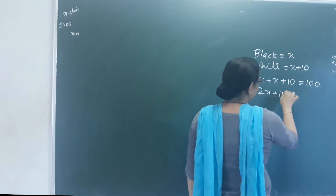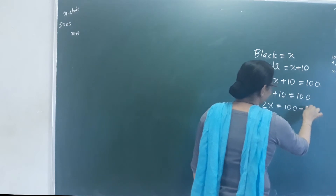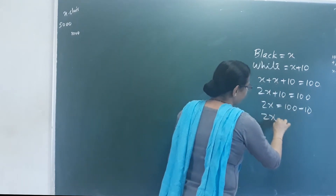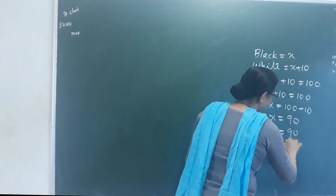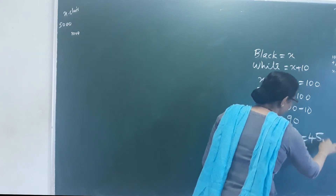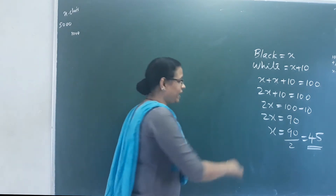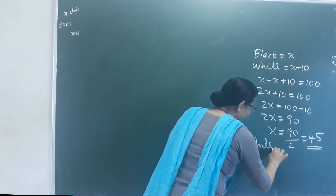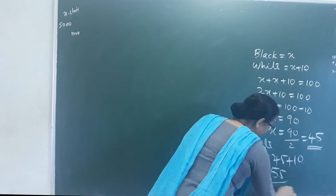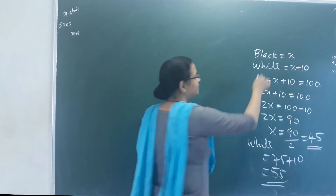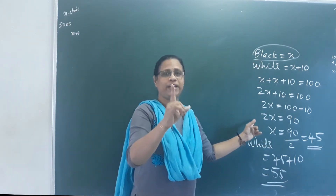2X plus 10 is equal to 100. 2X is equal to 100 minus 10. 2X is equal to 90. X is equal to 90 divided by 2, that is equal to 45. So if X is the black bead, black beads are 45. White beads: 45 plus 10 is 55. This is the one-variable model.